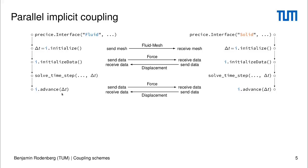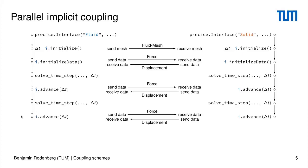Usually, if you do implicit coupling, you will do several iterations here and you will probably also do several time windows in order to reach the end of your simulation. So we will call advance again maybe a few more times and then in the end we will finalize.